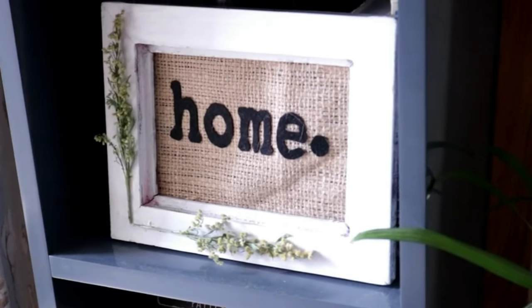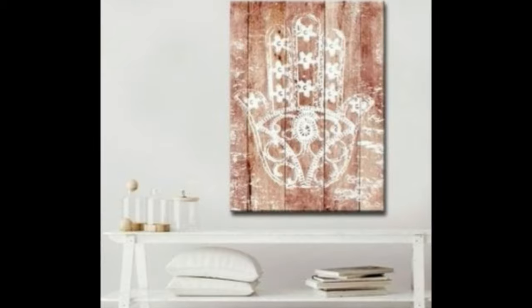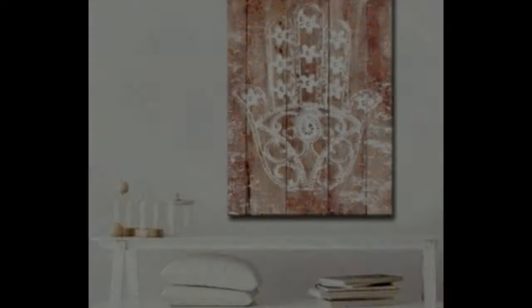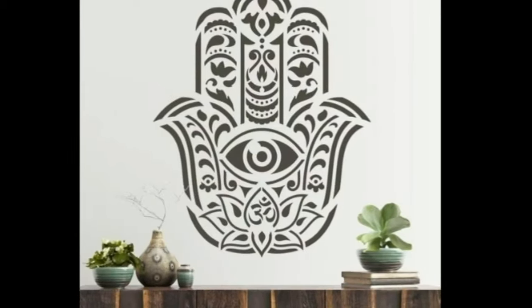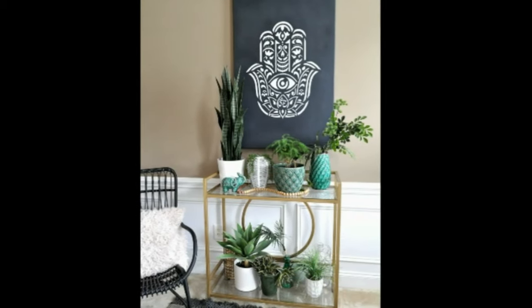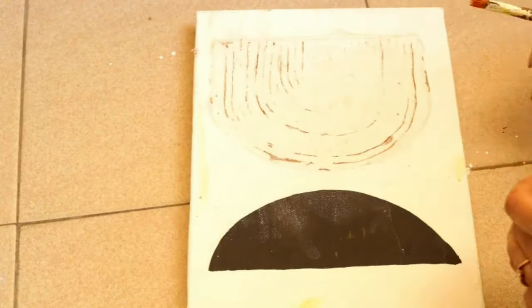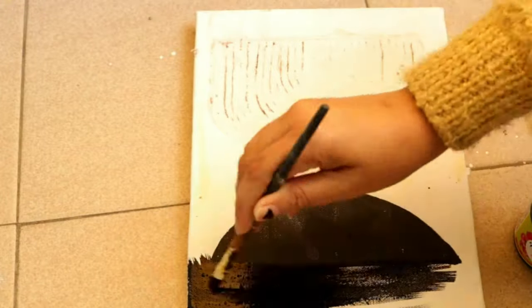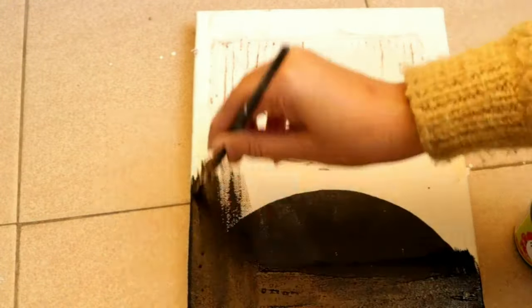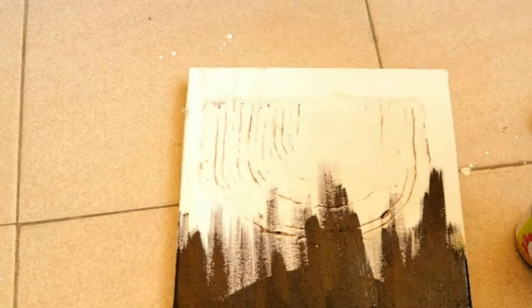Moving on to our fourth DIY, which is Hamsa canvas wall art. The Hamsa sign came from the Middle East and it is believed that it brings good fortune. I have seen stencils and wall art, tapestries. There are thousands of designs using Hamsa, so we are also going to make one. I am going to use one of my old canvas frames for this. Basically, I am going to give it a coat of black acrylic paint. You can use a fresh canvas. It is up to you. I wanted to reuse this old canvas, so I am painting it black.